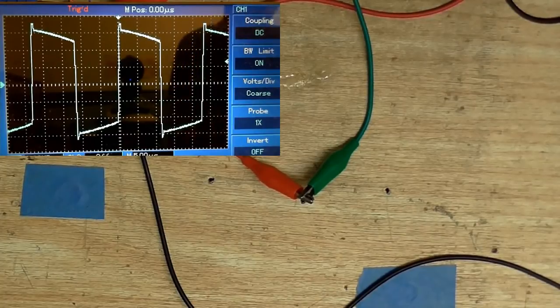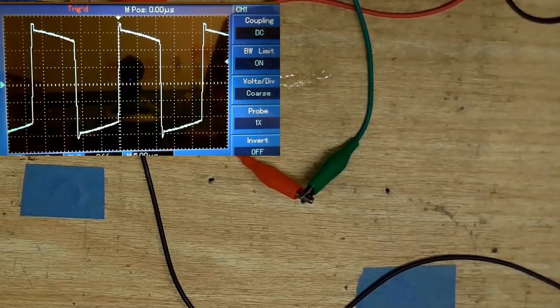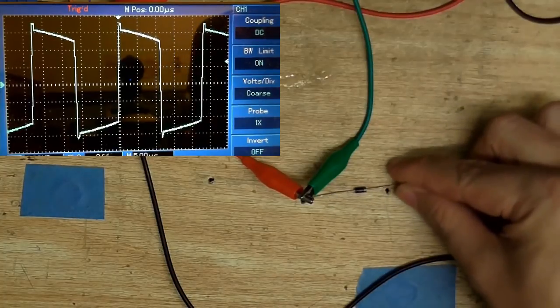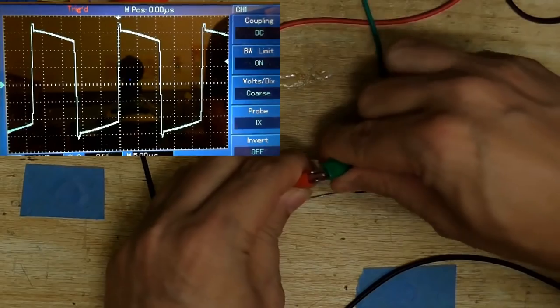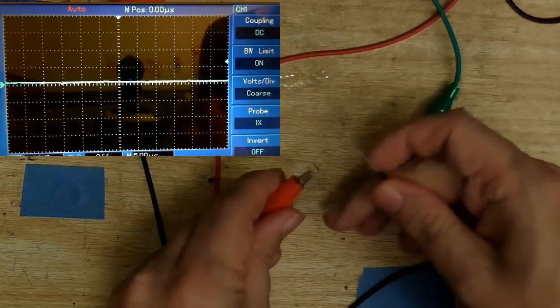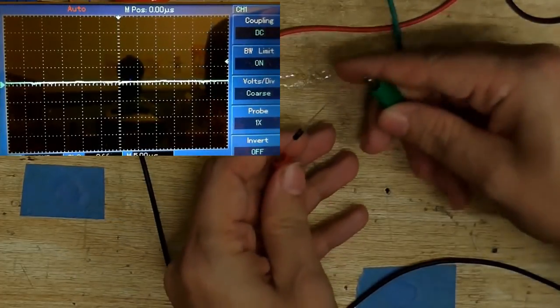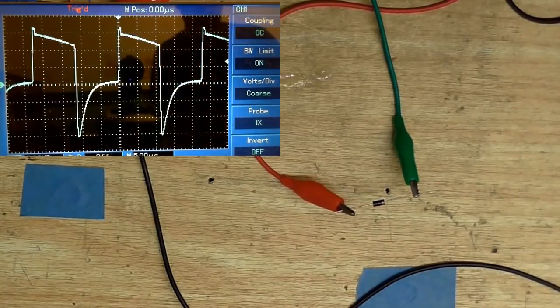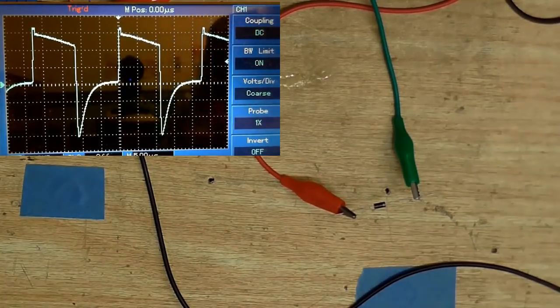Firstly, let's try a crappy 1N4007 diode. Now, the frequency I'm using is about 45kHz. So, a diode like this should not be able to rectify at that kind of frequency because they're just not that fast enough. So, let's see what we get. Well, I think that's pretty self-explanatory.